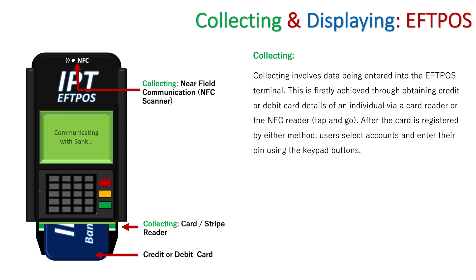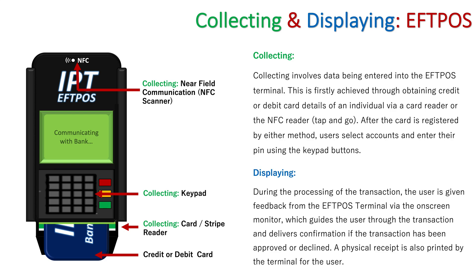The next step is to enter a PIN, and we use the keypad on the terminal to do that, as well as the colored buttons to select which account we want to use — whether it be savings, credit, or debit.